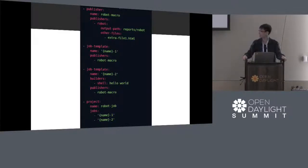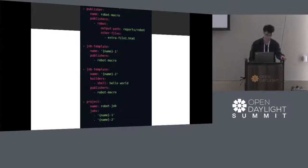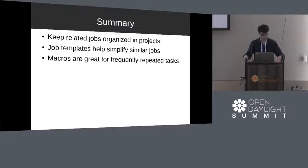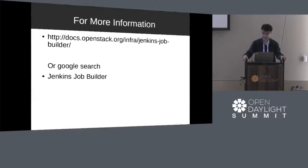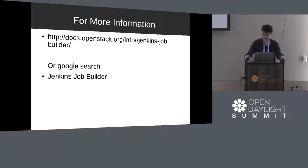This will help keep the code simple and small if you have a lot of jobs in the future. Quick summary: related jobs are organized using projects; job templates help simplify similar jobs; and macros are great for frequently repeated tasks. If you are interested in Jenkins Job Builder, I provided the link, or you can do a quick Google search — 'Jenkins Job Builder' should be the first link. That's my presentation. Thank you for listening.